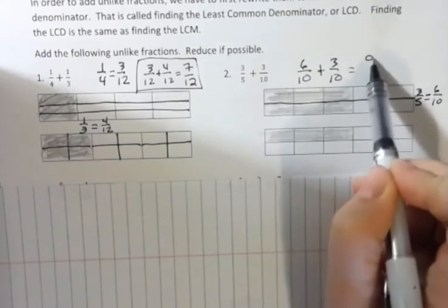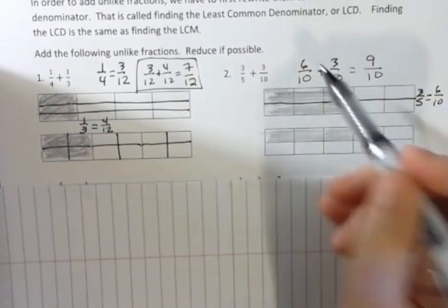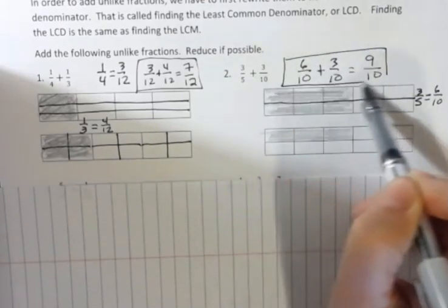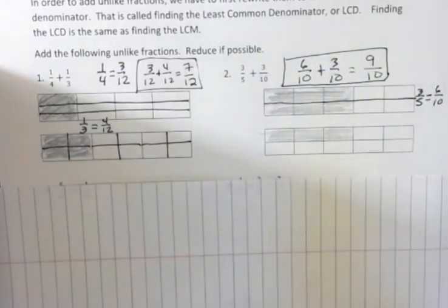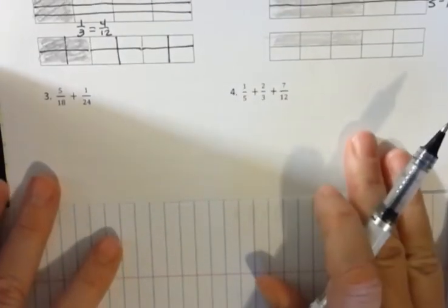And if I add those together, I get 9 tenths, which you can see from my picture is true. So, that's what's happening. We're not going to use pictures for the rest of these, but I wanted you to get a sense of what's happening when we're changing those denominators. Sometimes the denominator, the LCD, is not obvious like it was in the first two problems.